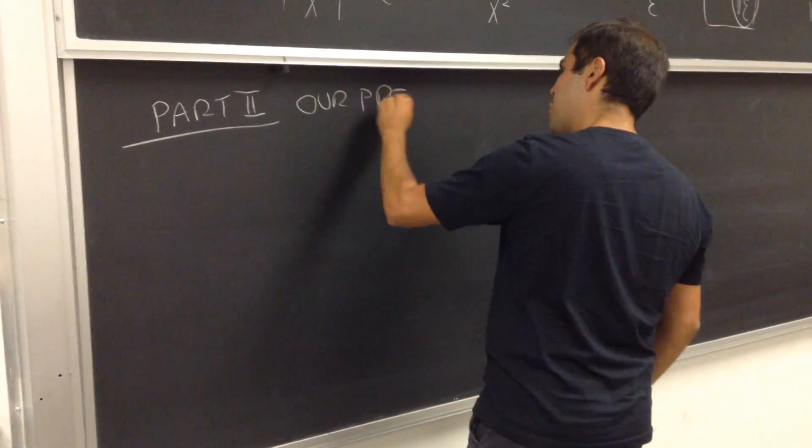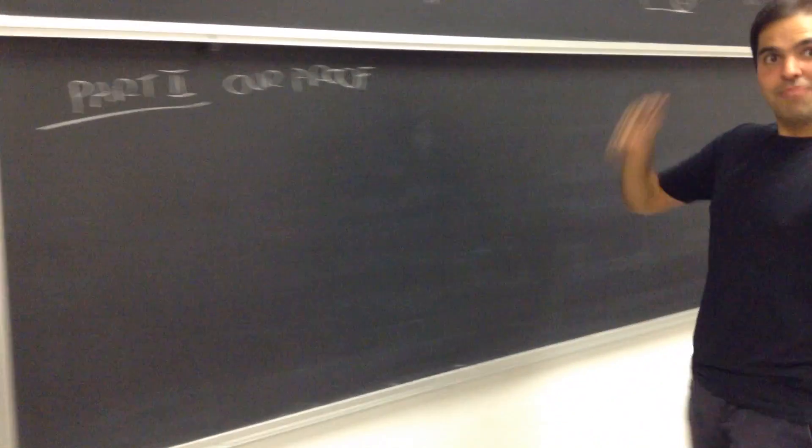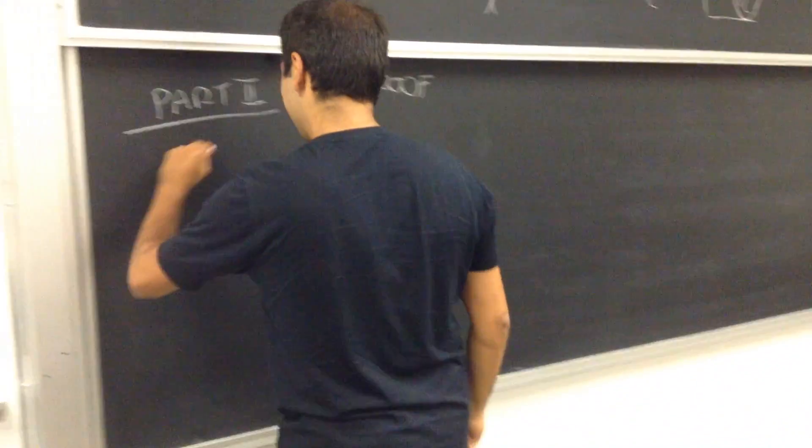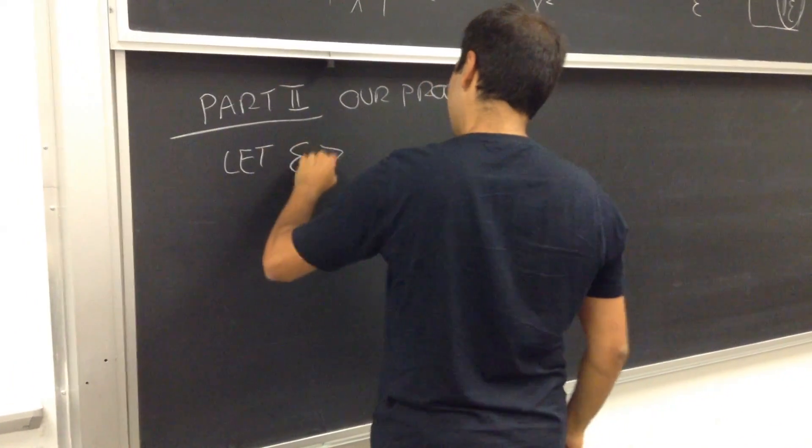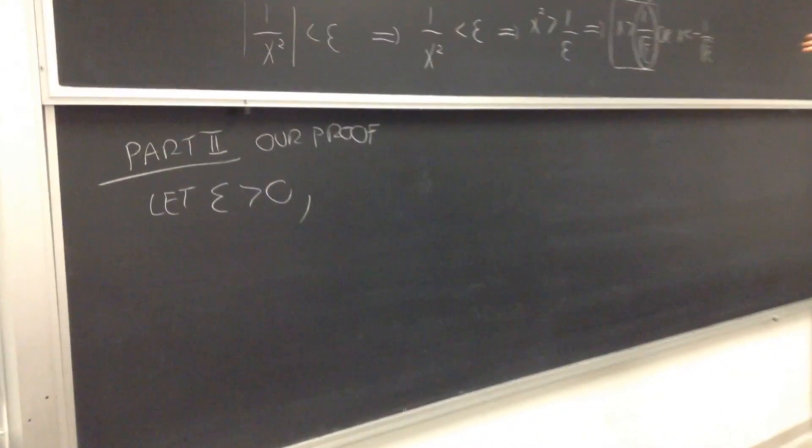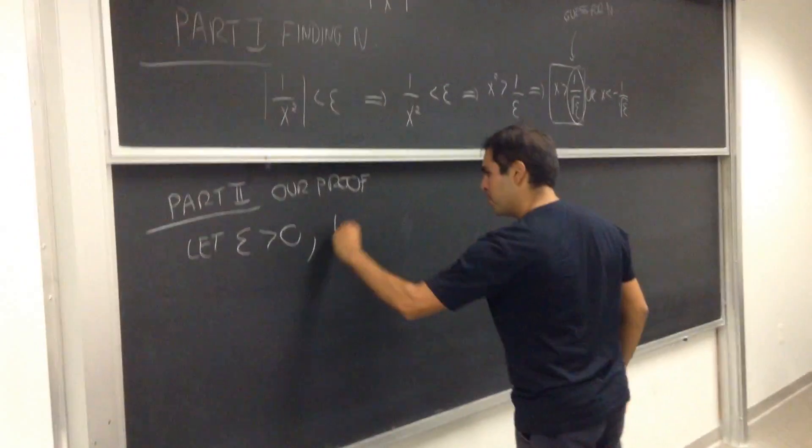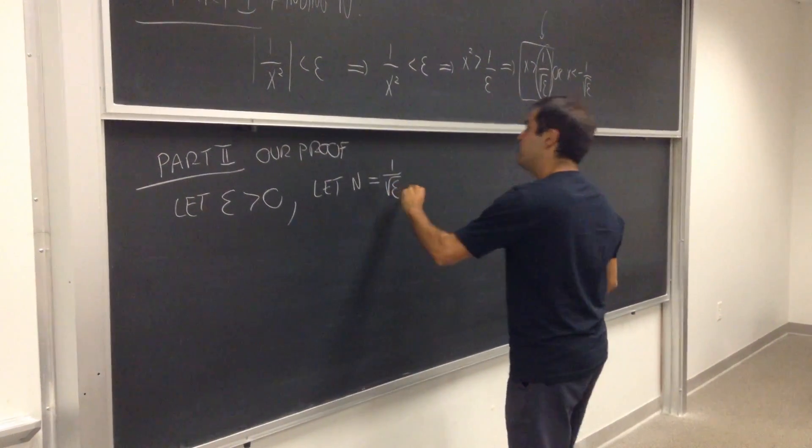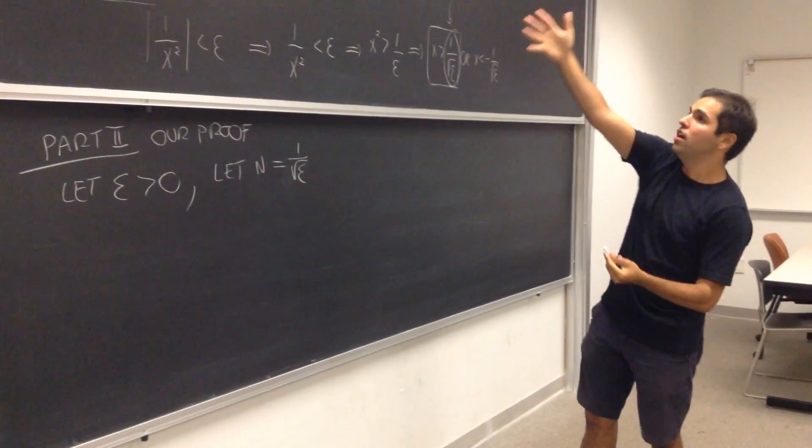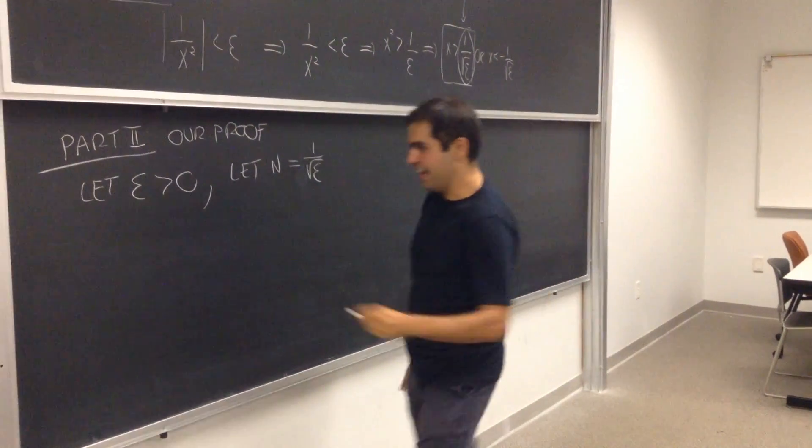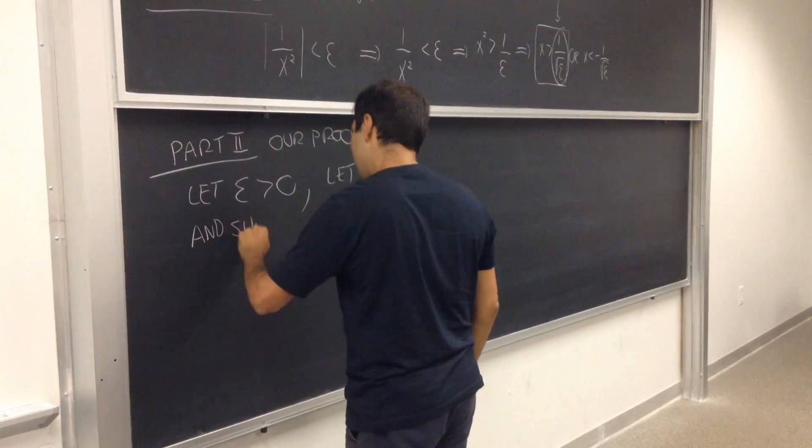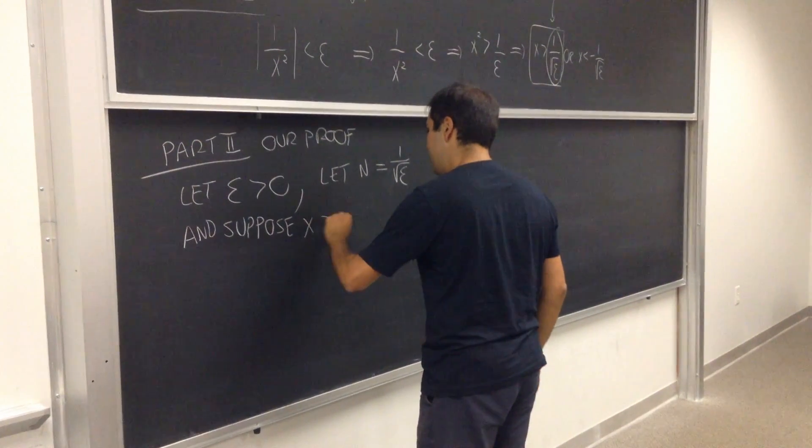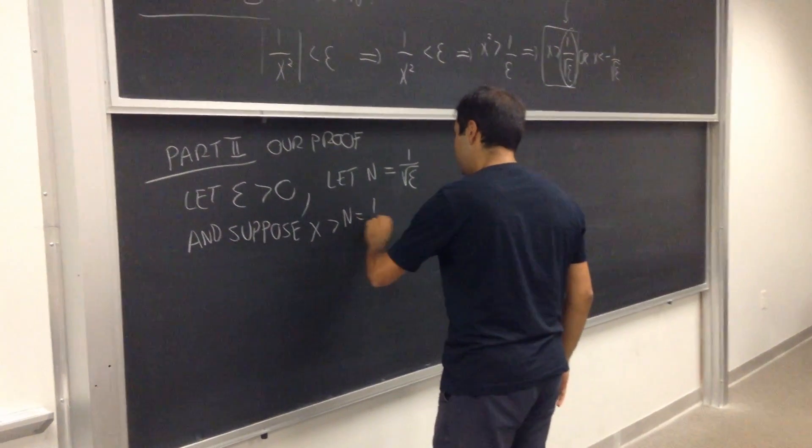Our proof. So, abracadabra, let epsilon be positive. Epsilon be positive. And let N be what we found before. Let N be 1 over square root of epsilon. And suppose that x is bigger than N. x is bigger than N, which is 1 over square root of epsilon.